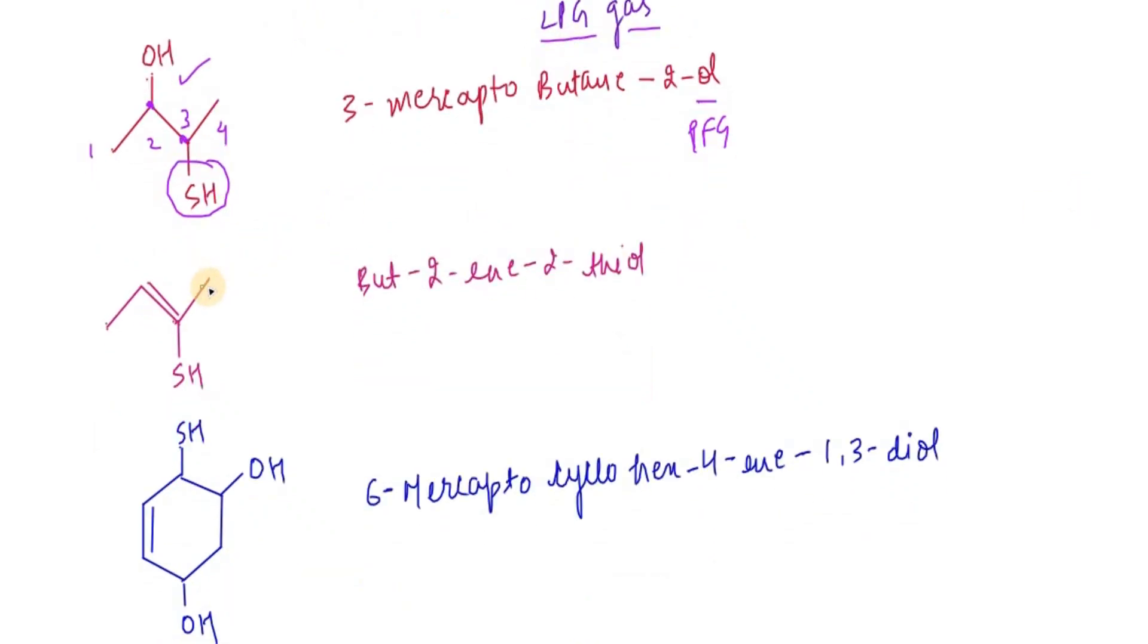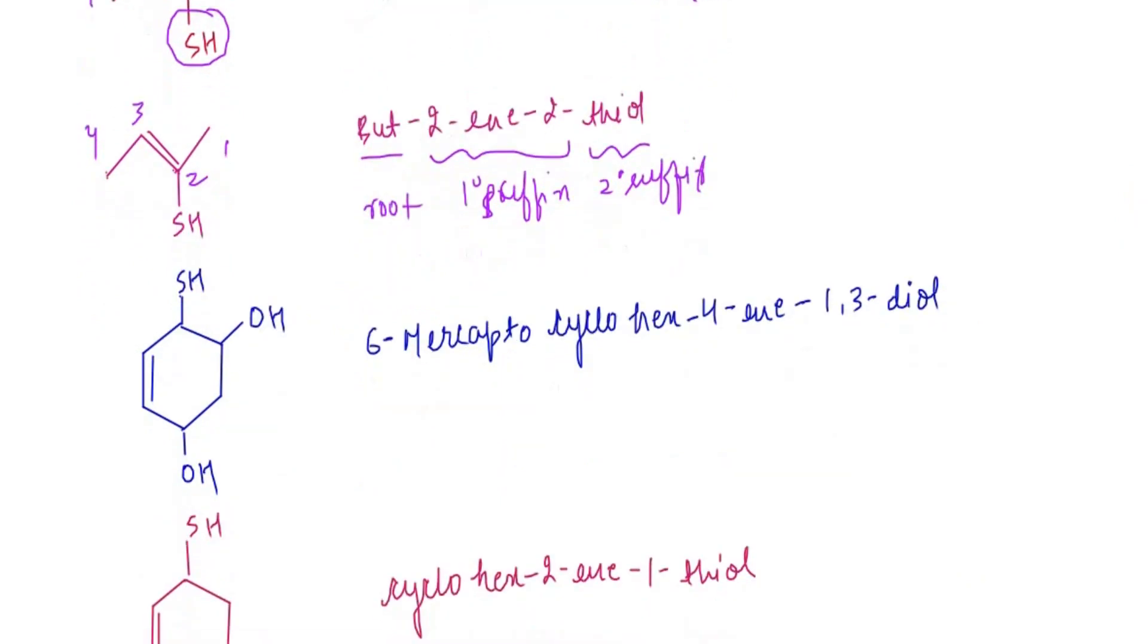Now again, if you want to name it, it is 1, 2, 3, 4, so butane - that is the root word. Then it is 1 degree suffix and 2 degree suffix. So it is 2-in and 2-thiol. Now we look at the further compound.